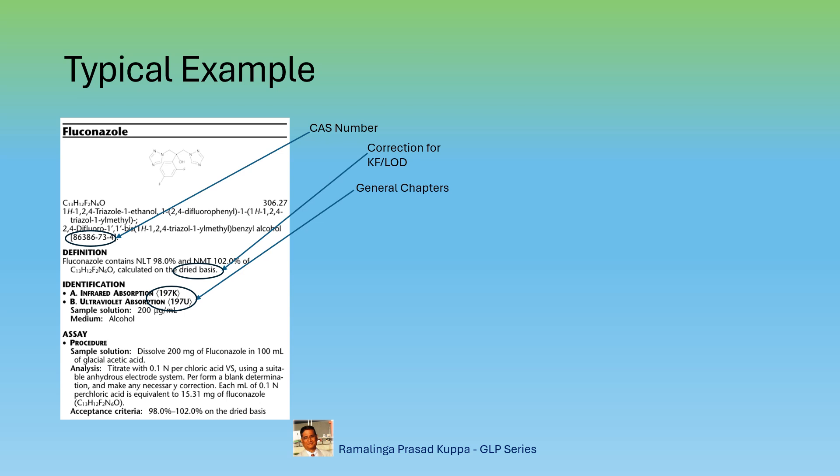These tests must be carried out as prescribed in these chapters, 197K for infrared and 197U for ultraviolet. Your internal SOP should capture all intricate points of these two chapters. Check whether your SOP includes all this information from the pharmacopoeia.